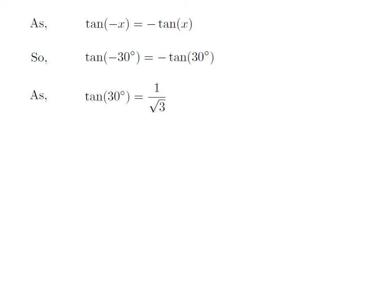We know the value of tangent of 30 degrees is equal to 1 upon square root of 3. So, we get the value of tangent of minus 30 degrees is equal to minus 1 upon square root of 3.